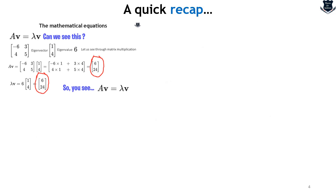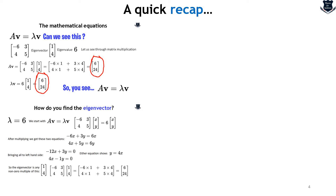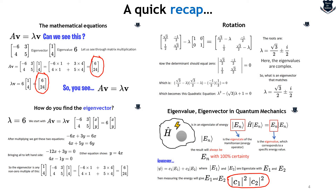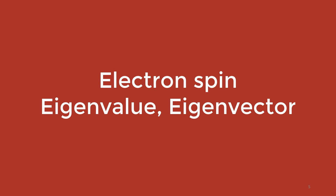We also saw later that we can mathematically derive the equation Av equals Lambda v, and I have shown that this can be mathematically proven. I covered the step-by-step approach to finding Eigenvectors in the first video. We also saw how rotation is very important — how cos theta and sin theta change — and finally what Eigenvalue and Eigenvector mean in terms of quantum mechanics, taking a typical quantum system measuring energy via the Hamiltonian to get En with 100% certainty. We paused there, and this is where we start today's video: electron spin and its related concepts of Eigenvalue and Eigenvector.